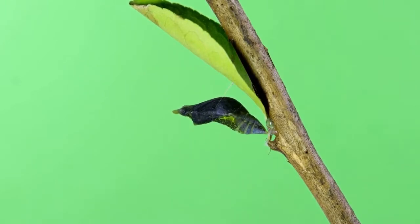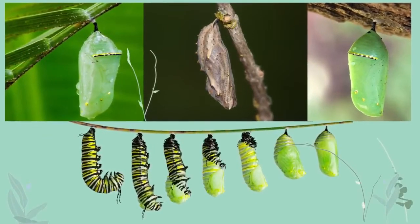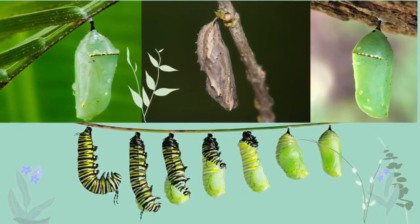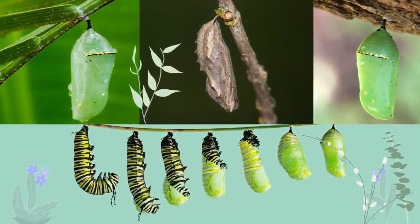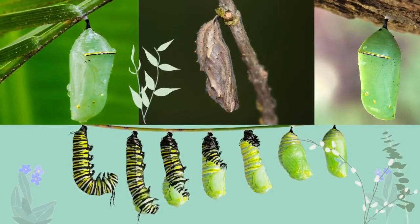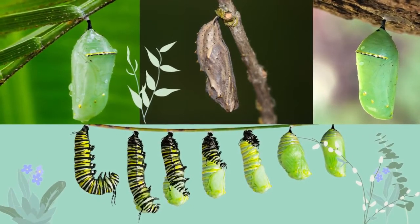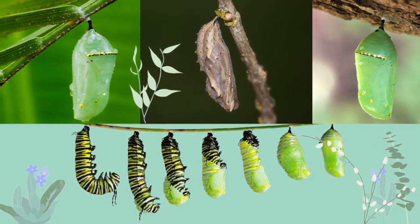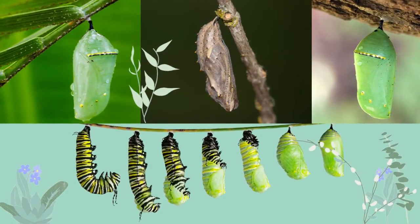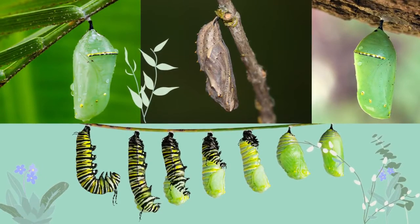Special cells that were present in the caterpillar are now growing rapidly. They will become the legs, wings, eyes, and other parts of the adult butterfly.